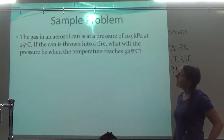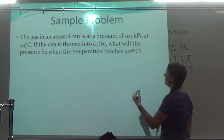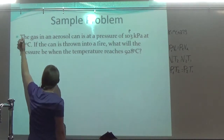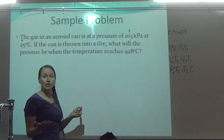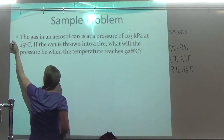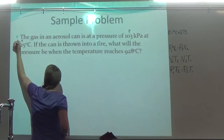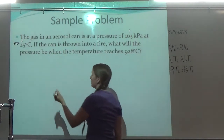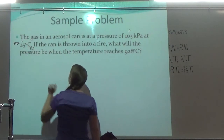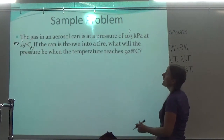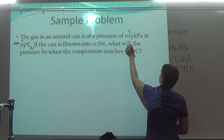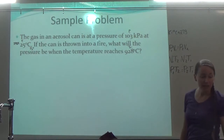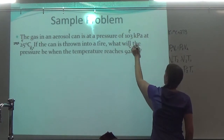The gas in an aerosol can is at a pressure of 103 kPa — so there's my P1 — at 25 degrees Celsius. So there's my T1, but I have to change that to Kelvin. I add 273 and get 298 Kelvin. If the can is thrown into a fire, what will the pressure be? So I'm looking for P2 when the temperature reaches 928 degrees Celsius — there's my T2 — but it's in Celsius, so I need to add 273 to get 1201 Kelvin.